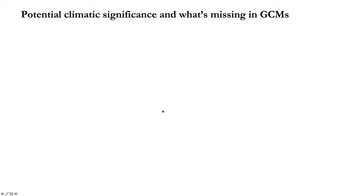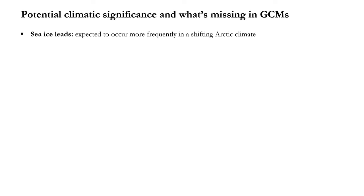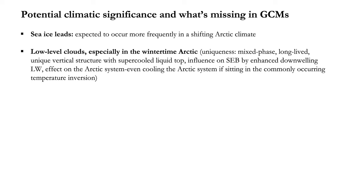The mechanism is interesting: for the frozen lead, the thin ice cover maintains a relatively large sensible heat flux of several hundred W/m², but almost completely reduces the moisture fluxes. This combination creates a very dry but convective environment that tends to dissipate low-level clouds. In a warming Arctic climate, more leads are expected due to thinner and younger sea ice that fractures more easily, implying a stronger impact on above-lead low-level clouds.